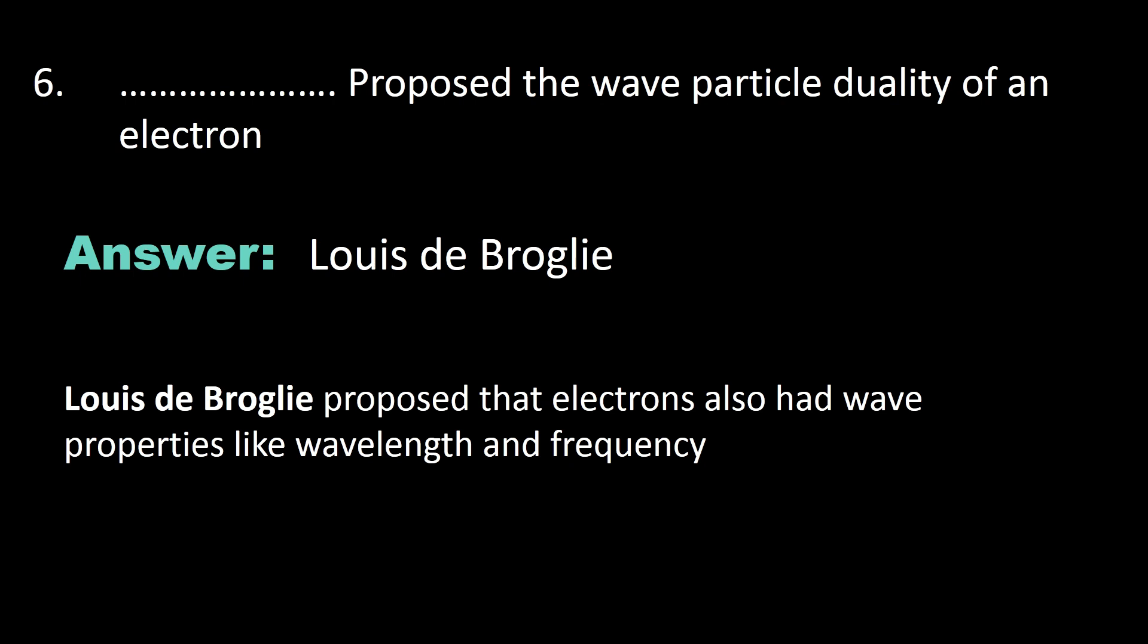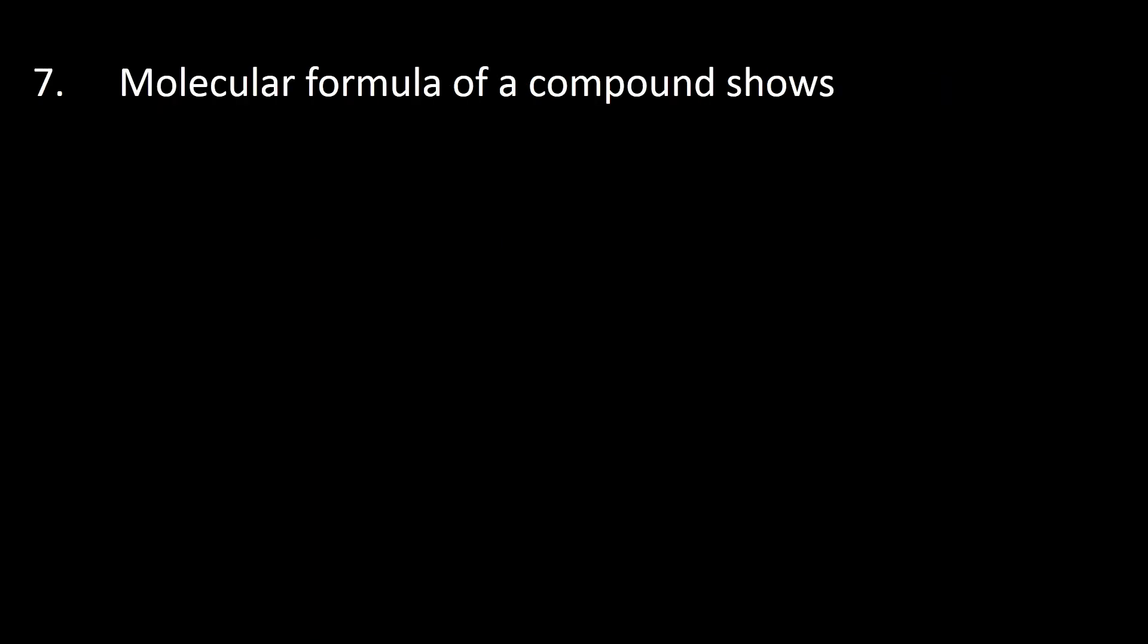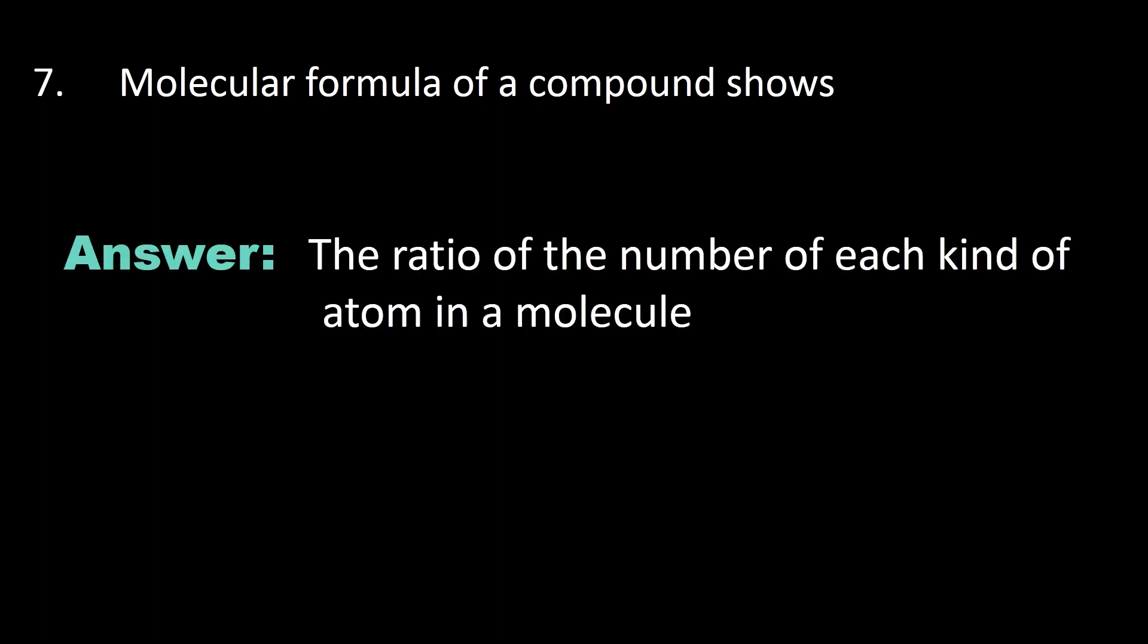Number seven: the molecular formula of a compound shows the ratio of the number of each kind of atom in a molecule. That is what the molecular formula of a compound shows.